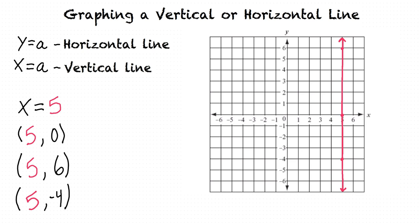So the graph of any equation where x equals a constant will be a vertical line passing through the x axis at that constant value. Exactly.